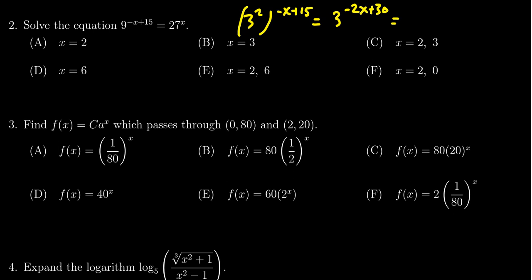Similarly, on the right-hand side, 27 is the same thing as 3 cubed. You raise this to the x. So multiplying the exponents together, we get 3 to the 3x power. So now we have 3 to the negative 2x plus 30 power, and that's equal to 3 to the 3x power.